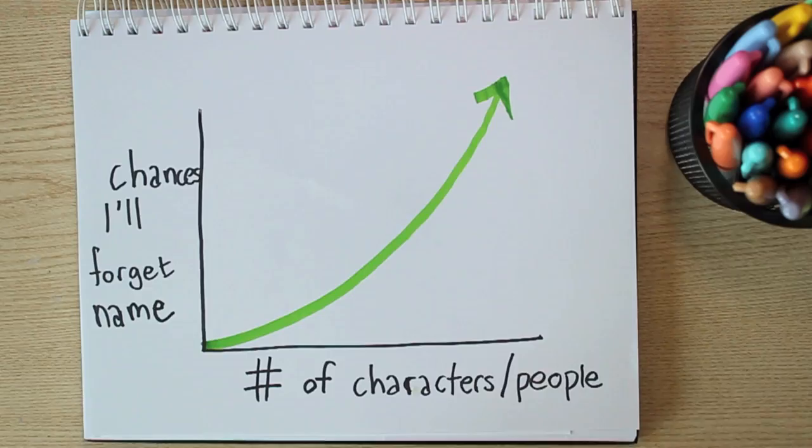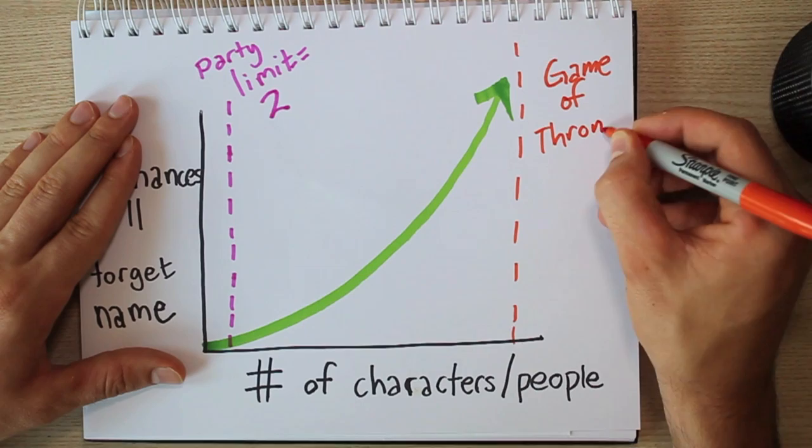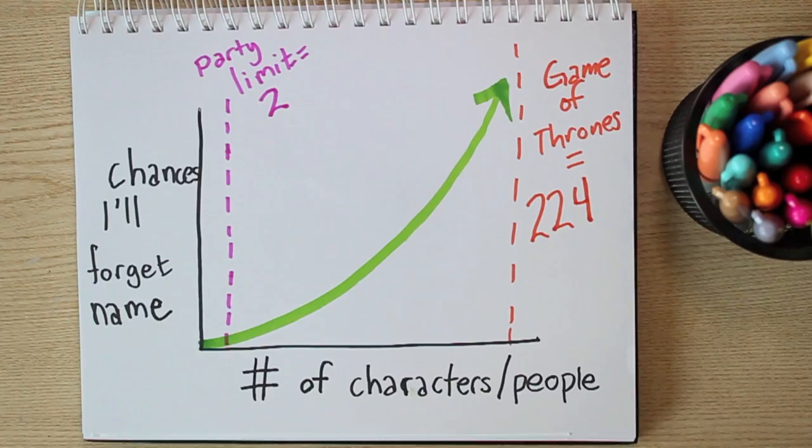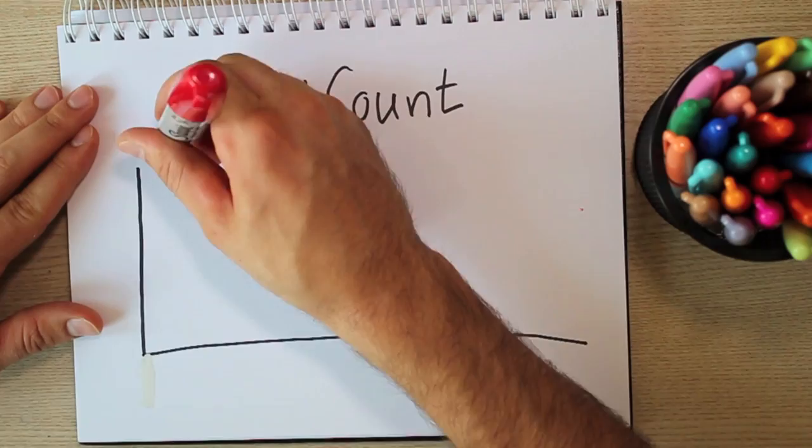In fact, the audiobook of Game of Thrones is listed in the Guinness Book of World Records for having the most number of characters, a total of 224 distinct voices. So far, there have been five books in the Game of Thrones series, which is technically known as A Song of Ice and Fire.